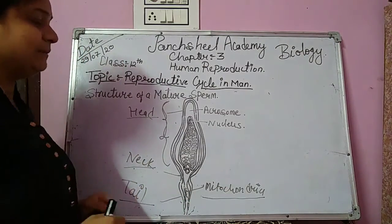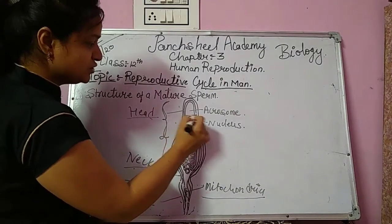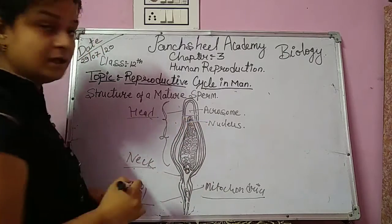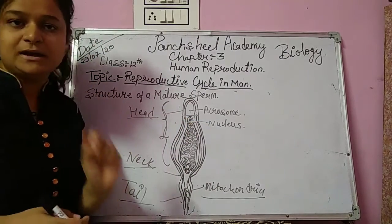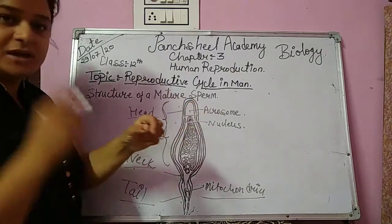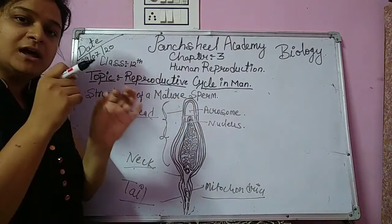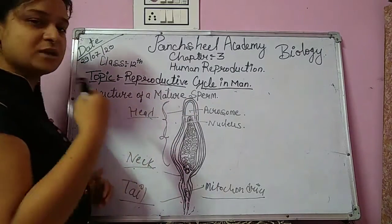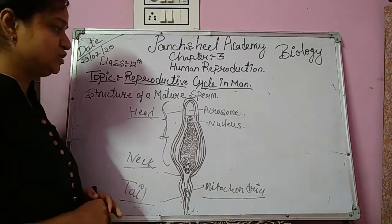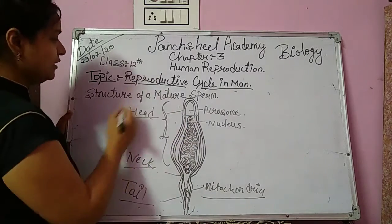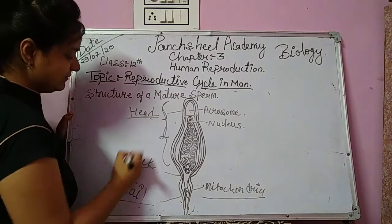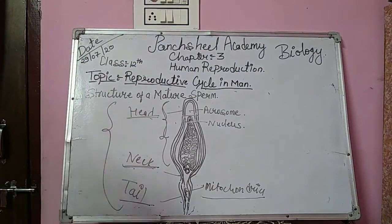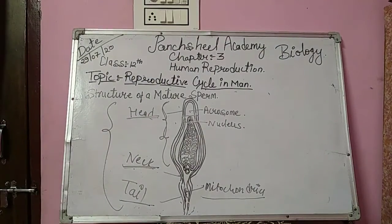The tail helps the sperm to swim. The nucleus is present in the head and the upper part is the acrosome. The sperm releases enzymes from the acrosome during fertilization. During the process of differentiation and development, the sperm have their heads embedded in the Sertoli cells, from which they get nourishment.